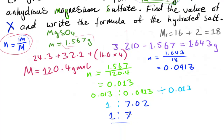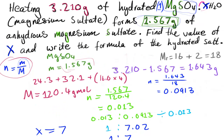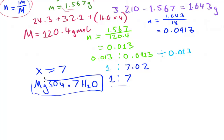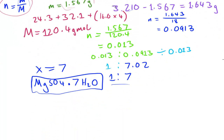So x is equal to seven — that answers the first part of the question. Now writing the formula of the hydrated salt: it would be MgSO4 dot 7H2O. That is our formula for this hydrated salt.